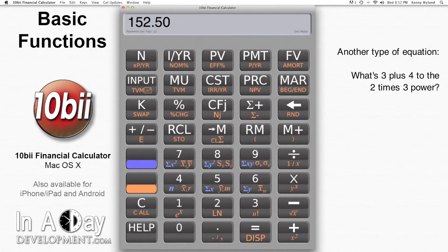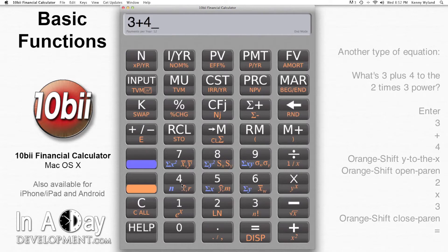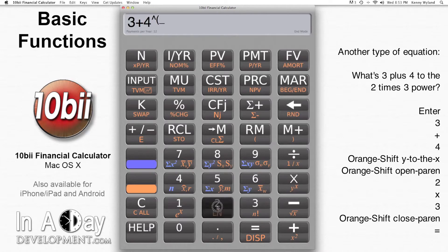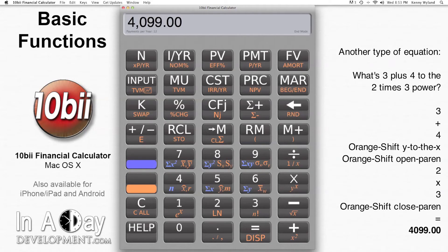Next, we want to do something a little more complicated. What's 3 plus 4 to the 2 times 3 power? We type in 3, plus 4, orange shift, y to the x, orange shift, open paren, 2 times 3, orange shift, close paren, and hit equals. I get 4099.